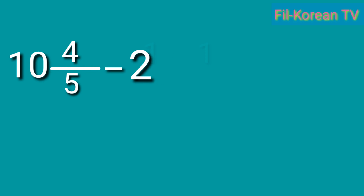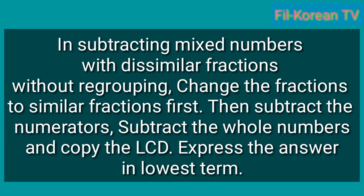Let's start the lesson with this example: 10 and 4 fifths minus 2 and 1 fourths equals. In subtracting mixed numbers with dissimilar fractions without regrouping, change the fractions to similar fractions first. Then, subtract the numerators, subtract the whole numbers, and copy the LCD. Express the answer in lowest term.